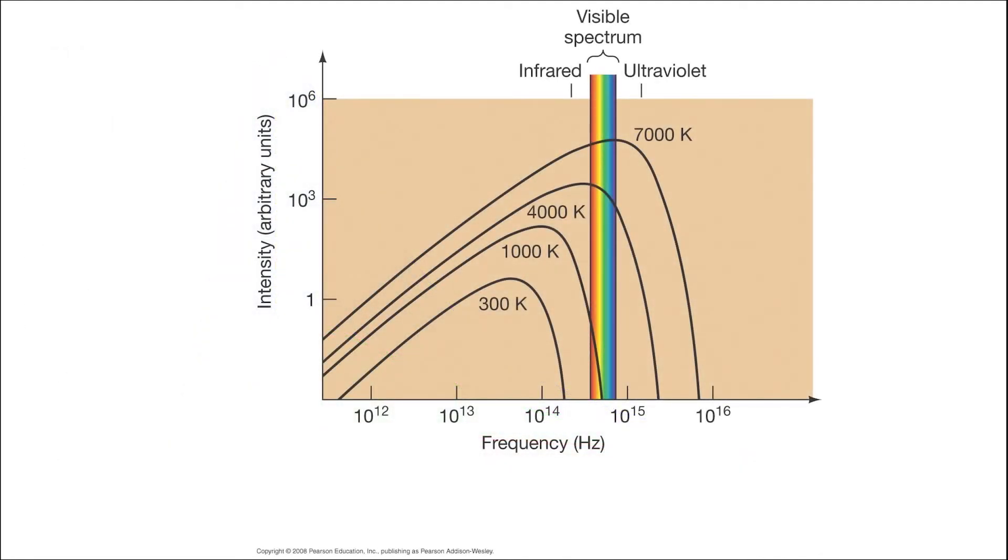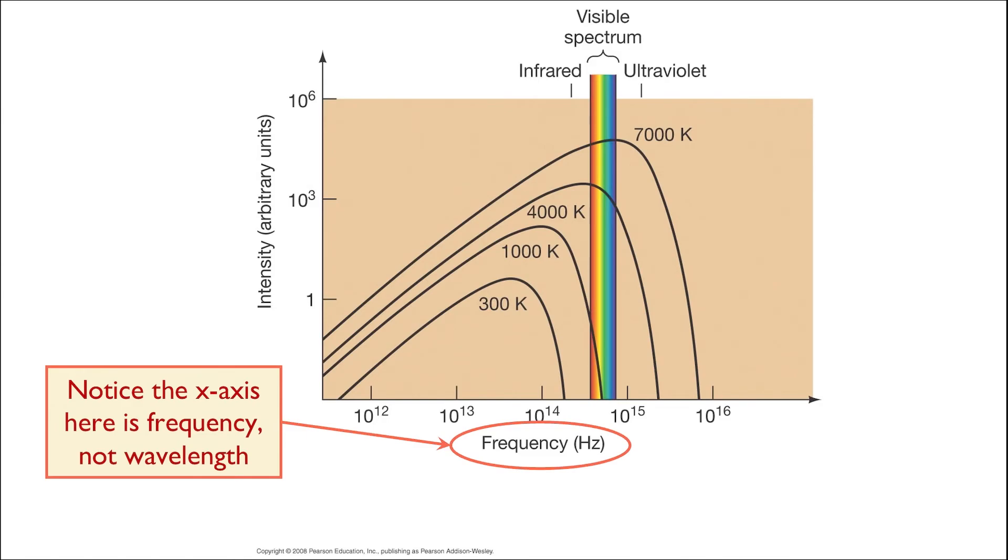Here we see the spectra of several stars, but the shape is slightly different from the previous blackbody curves we've seen. In this case, the main difference is that the x-axis is in units of frequency, not wavelength. But thinking back to what we covered in unit 3, wavelength and frequency are related through lambda equals c over f.